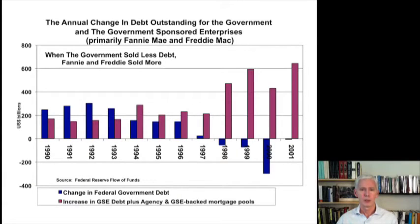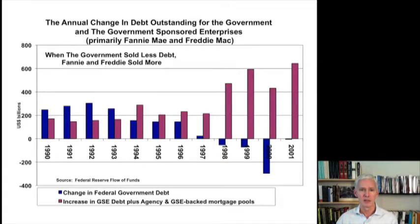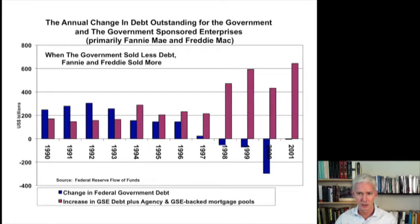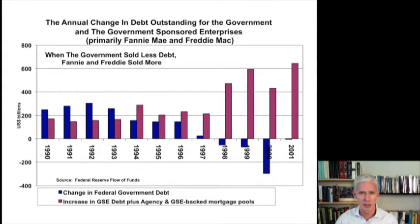In this chart there are two bars. The blue bar shows the increase in government debt outstanding every year from 1990 to 2001 — essentially the U.S. budget deficit in those years. The red bar represents the amount of debt sold each year by Fannie Mae and Freddie Mac. Looking at 1996 through 2000, the U.S. economy was very strong and the stock market bubble was raging. The government had very high tax revenues, and as a result the budget actually went into a surplus in 1998, 1999, 2000, and 2001 — so there were no new government bonds sold in those years.